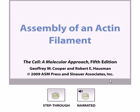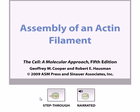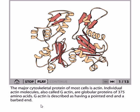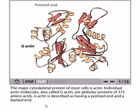Now let us talk about the assembly of an actin filament. We know that actin filaments are really important inside the cell for maintaining the structure and integrity of a cell. Now we are going to look at how actin filaments are getting assembled with each other to make the actin polymer, which gives the cell tensile strength. The actin is the major cytoskeletal protein of most cells.